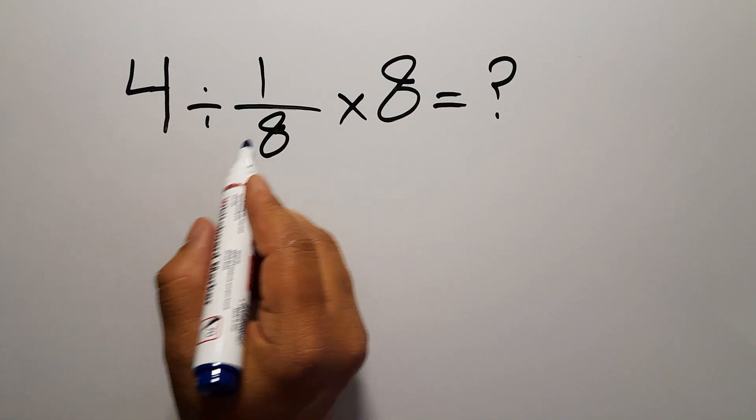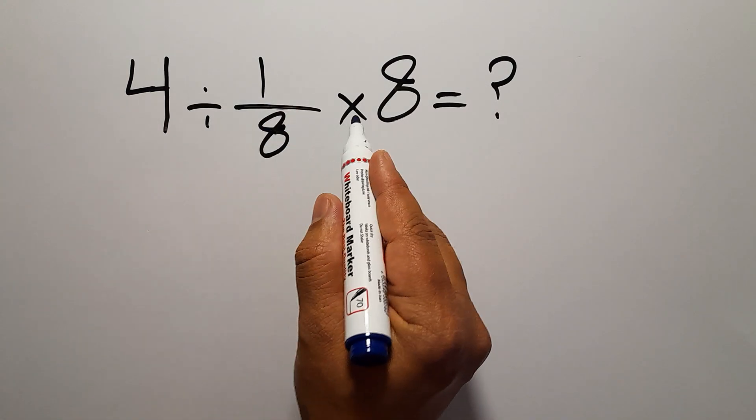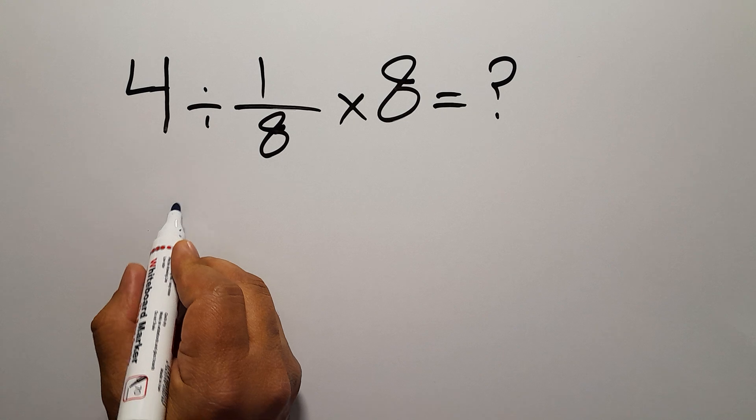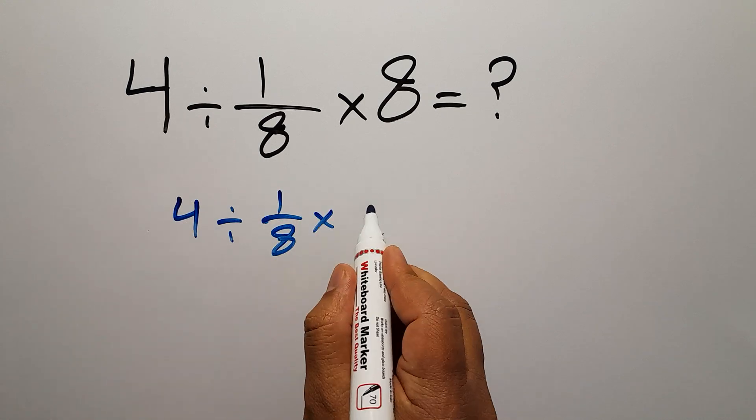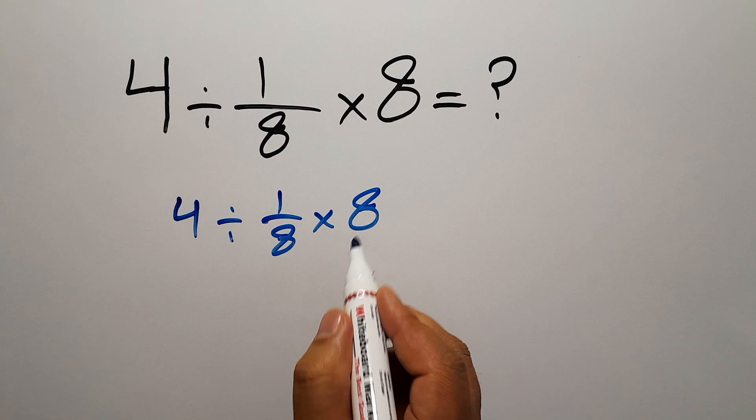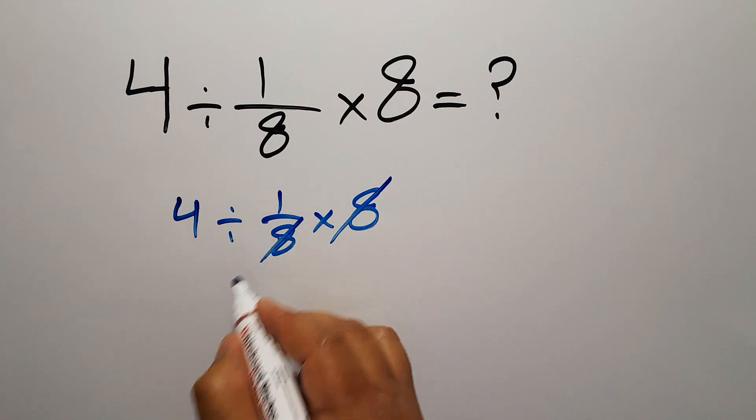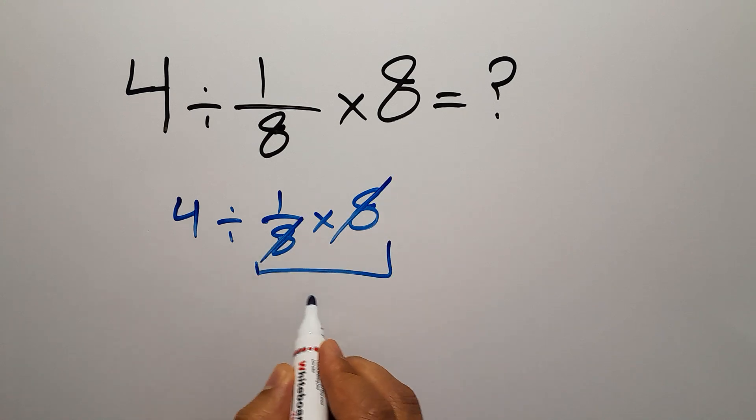4 divided by 1 over 8 then times 8. We can easily cancel this 8 and this 8, so here we have 1, and 4 divided by this 1 which equals 4.